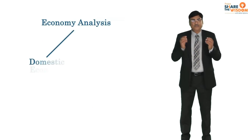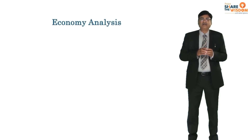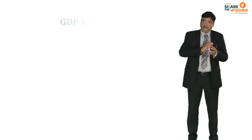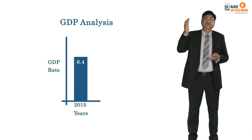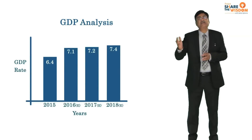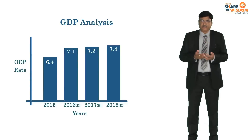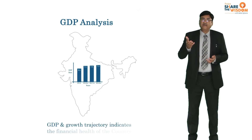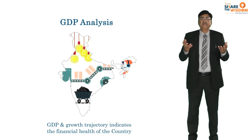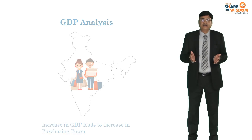Let me take you through the economy analysis first — the domestic economy and the global economy. The most important point is GDP, the Gross Domestic Product: how stable the GDP is, how fast it is growing or declining, the track record of the last three to five years, and the expected GDP growth in future. The higher the GDP, the better, because manufacturing, mining, electricity, and services are increasing, and accordingly the purchasing power of people will increase.